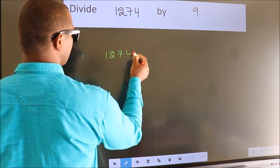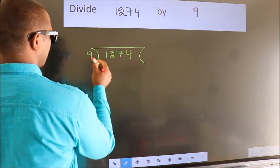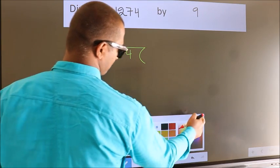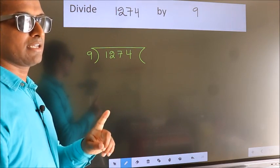1, 2, 7, 4 here. 9 here. This is your step 1. Next.